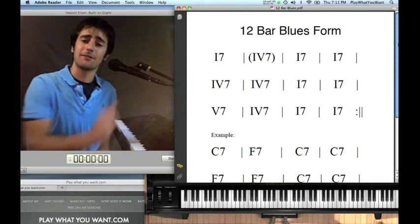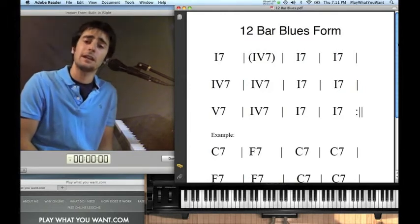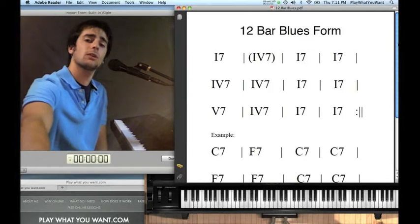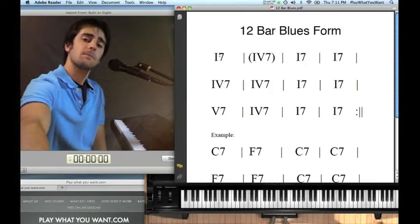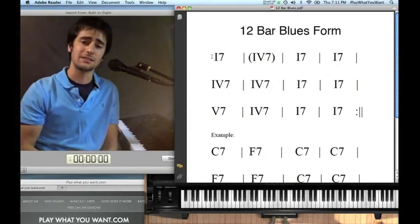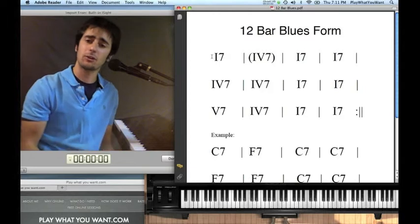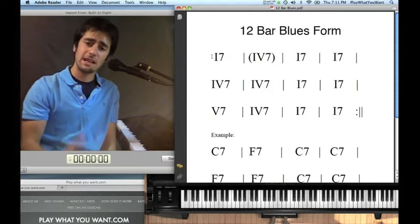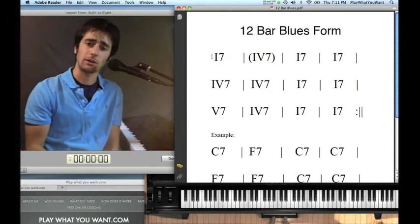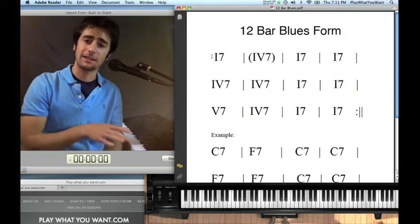Right here on this PDF to your right is the 12-bar blues. I have it written out in Roman numerals so that this first chord here is I7. Musicians often use Roman numerals so that when you are playing in different keys, whether you're in C, D, E, or A-flat, it doesn't matter. If you think of the numbers, the Roman numerals of the chord, it means that you can apply this form to any of the 12 key centers.